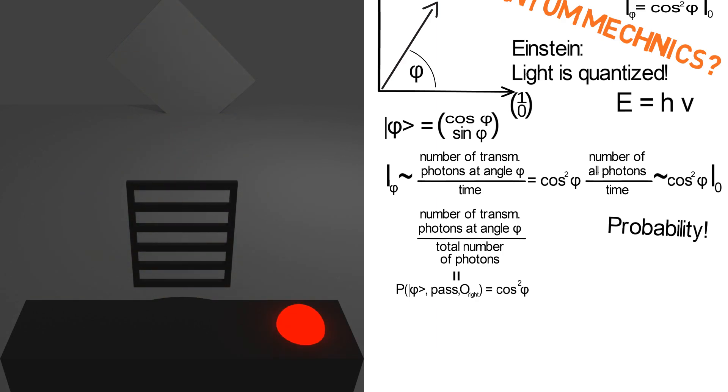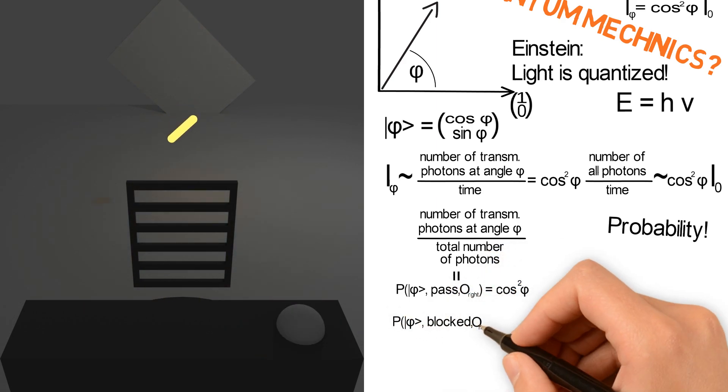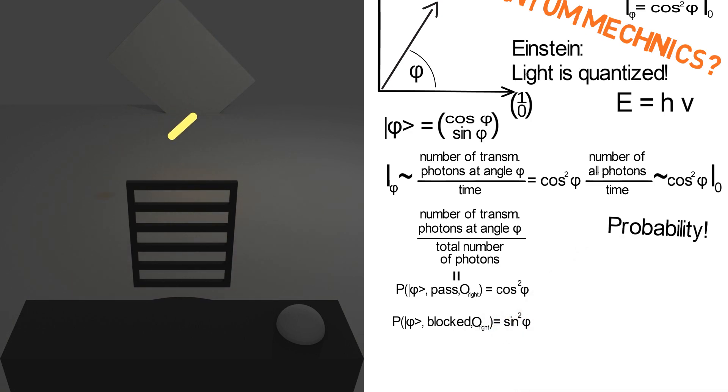Similarly, the probability for such a photon to be blocked is sine squared phi. Of course the sum of all probabilities is 100% or 1.